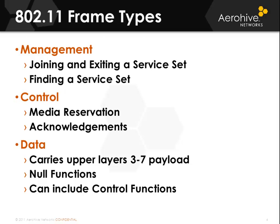802.11 frame types: there are three — management, control, and data. Management frames are used for finding, joining, and exiting service sets. Subtypes include beacons, probe request, probe response, authentication and association request and response, de-authentication, disassociation, and action frames. Control frames are used for media reservation such as ready-to-send, clear-to-send, clear-to-send-to-self, or acknowledgements. Data frames carry pure data with the encapsulated layer 3 through 7 payload. You can also have null function frames for power saving modes, and combination frames that include data plus some type of control function depending on the network configuration.